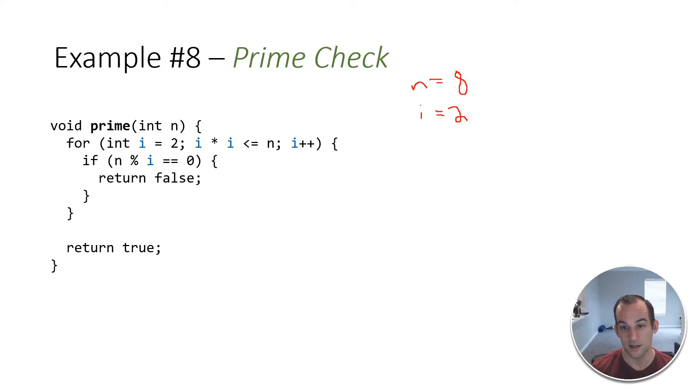Now if this was, let's say 9, so 9 mod 2 would actually be 1, because 2 goes into 9 four times and there's a remainder of 1. So we would not go inside that for loop because 1 does not equal 0. But in this case, 8 mod 2 does equal 0. So we're going to return false and we're done. So that means that 8 is not a prime number, which is true. We know that it's not a prime number.